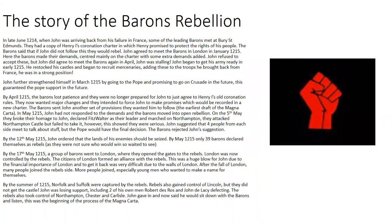The story begins in late June 1214 when John was arriving back from France. Some leading barons met at Bury St Edmunds, where they had a copy of Henry I's coronation charter, in which Henry promised to protect the rights of his people. The barons said if John didn't follow this, they would rebel. John agreed to meet the barons in London in January 1215, where the barons made their demands — mainly centred on Henry I's list of rules with extra demands added. John refused.